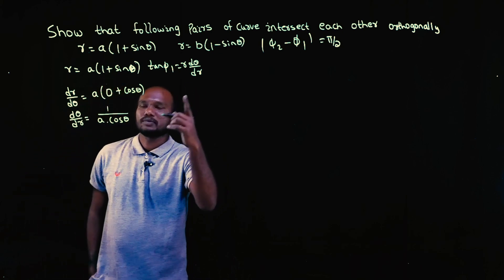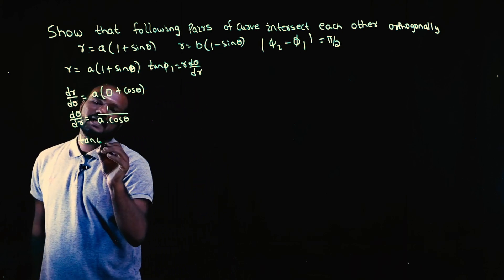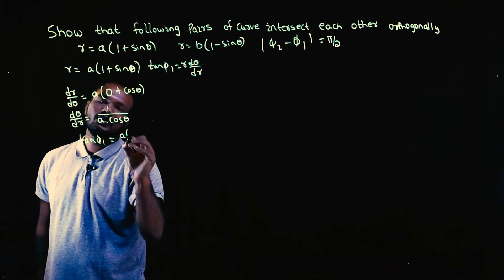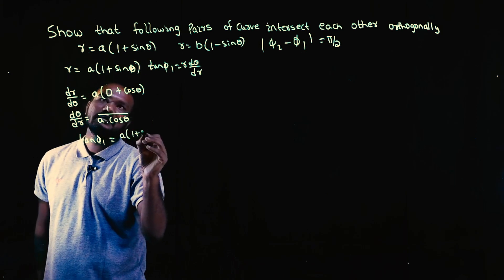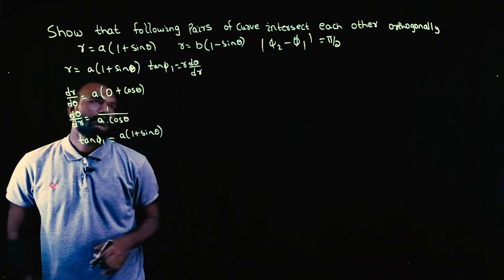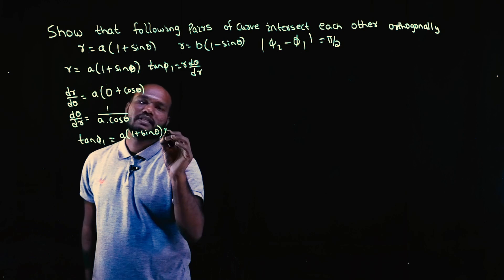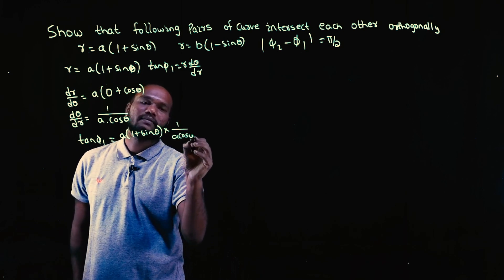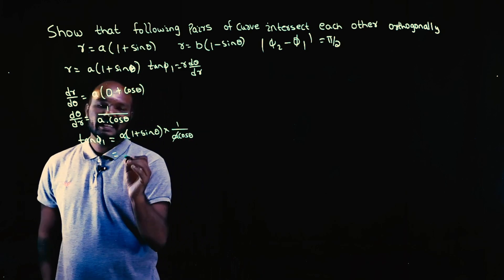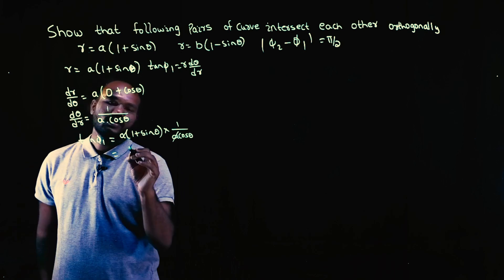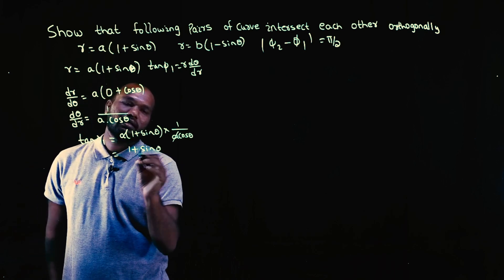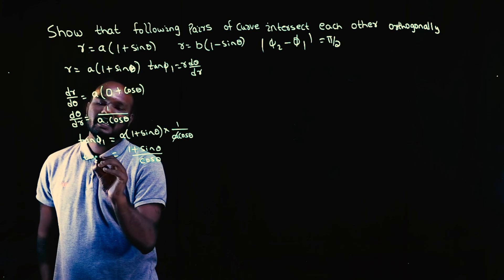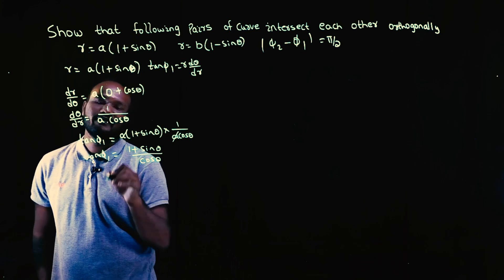So directly substituting in the formula: tan φ₁ is equal to R, which is A(1 + sinθ), into dθ/dR, which is 1/(A cosθ). The A's cancel, leaving tan φ₁ equal to (1 + sinθ)/cosθ.